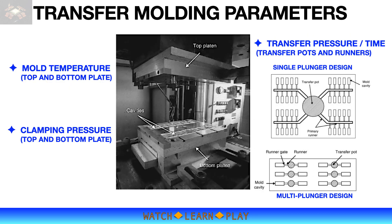There are certain machine and process parameters that must be set and controlled for a proper molding process. First is temperature — the mold temperature must be high enough for rapid curing of the part and must be controlled within a certain tolerance, otherwise process problems would be expected. For example, too high a temperature will lead to solidification of the molding compound before completely filling the cavities, while too low a temperature will not be sufficient to cure the mold material. Generally, a plus or minus five degrees Celsius tolerance is acceptable. Multiple heater cartridges are installed in both the top and bottom molds to heat the cavities evenly.